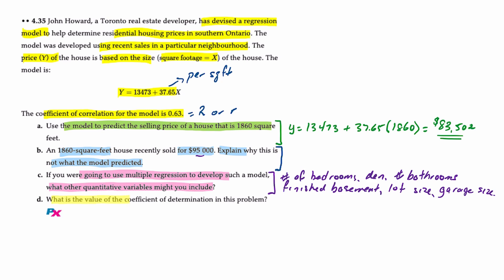And now this takes us to the last requirement: what is the value of the coefficient of determination in this problem? Well, the coefficient of determination is known as R squared. And if we know from the data provided that R is 0.63, then R squared must be 0.397.